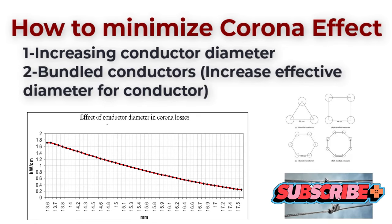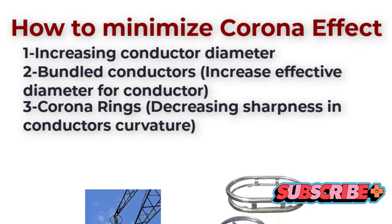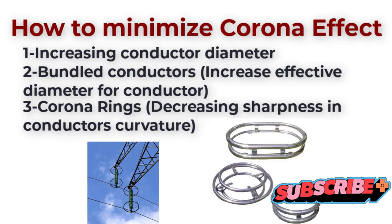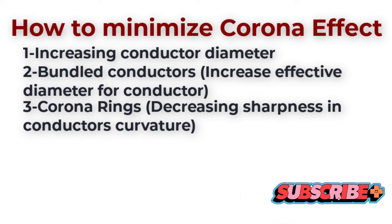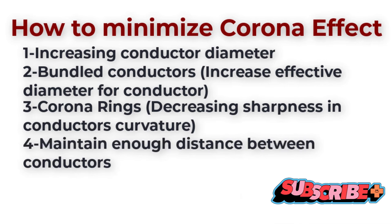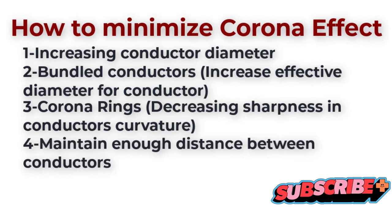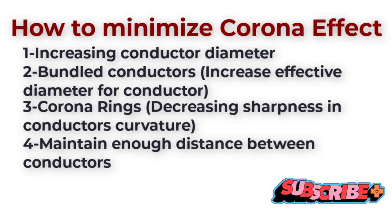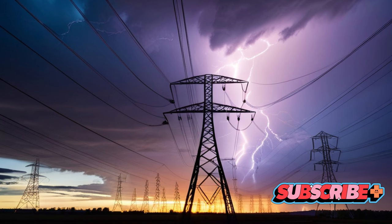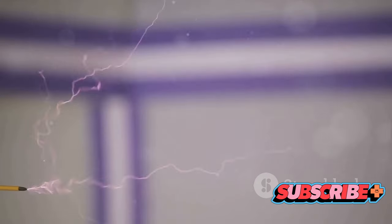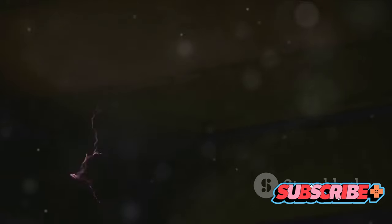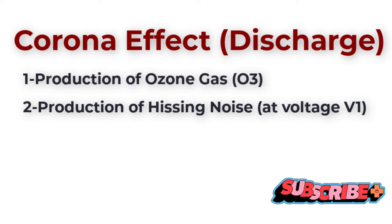Wrapping up, corona discharge is a fascinating yet complex phenomenon in the electrical world. It's a process where the air around a conductor becomes ionized and electrically conductive, causing the conductor to glow. This occurs when the electric field strength is high enough to ionize the air but not high enough to cause electrical breakdown or arcing to nearby objects. Corona discharge can occur in high voltage systems, particularly where sharp points, edges, or uneven surfaces are present on the conductor, and is more likely under wet or humid conditions and at higher altitudes where the air is thin.